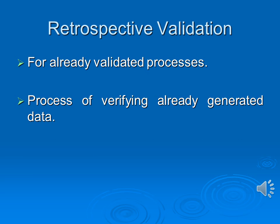Retrospective validation applies to existing processes and equipment and is based solely on historical information. Unless sufficiently detailed past processing and control records are available, retrospective validation studies are unlikely to be either possible or acceptable. With retrospective validation, the generated data already exist. Retrospective validation demonstrates that the existing process is under control.